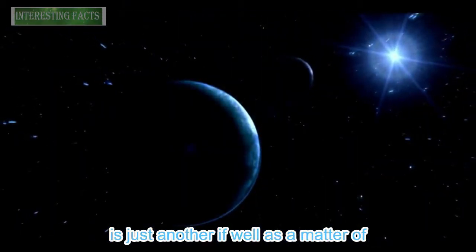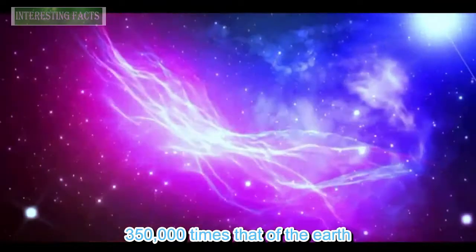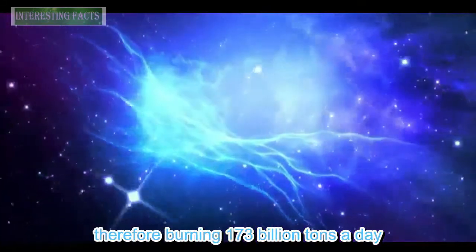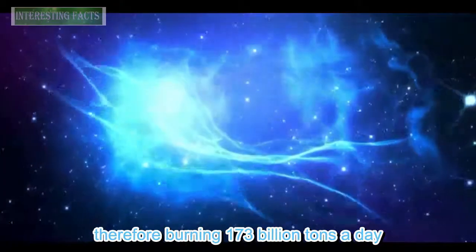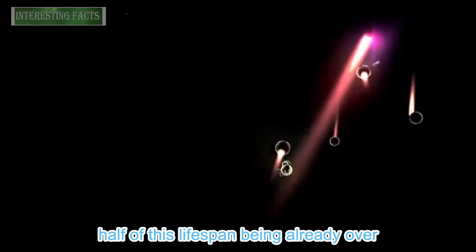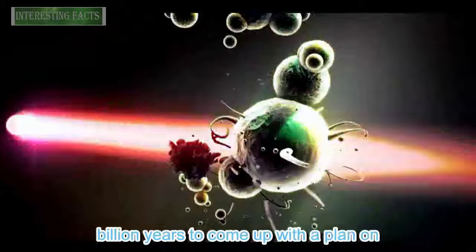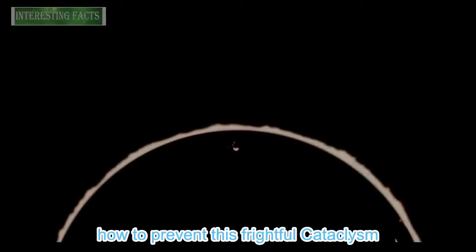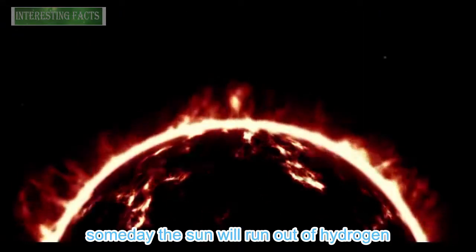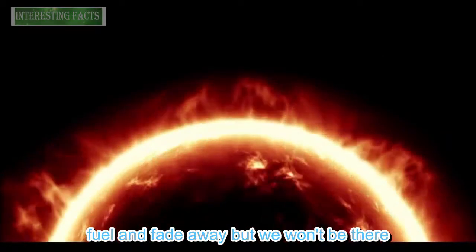But as a matter of fact, the mass of the sun is nearly 350,000 times that of the earth. Therefore, burning 173 billion tons a day, it can burn for 10 billion years with half of this lifespan being already over. Our descendants will have another 5 billion years to come up with a plan on how to prevent this frightful cataclysm. Someday the sun will run out of hydrogen fuel and fade away.